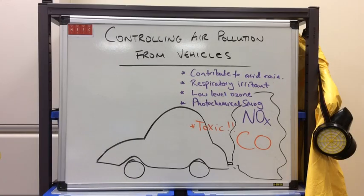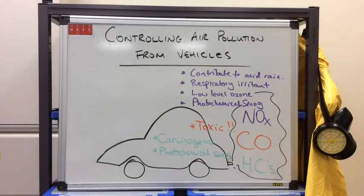Carbon monoxide is a highly toxic gas because it can bind with haemoglobin and prevent your blood from carrying oxygen. The unburnt hydrocarbons — volatile organic chemicals (VOCs) — are carcinogens, meaning they are cancer-causing chemicals. They also contribute to photochemical smog.